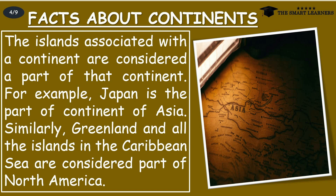The islands associated with a continent are considered a part of that continent. For example, Japan is part of the continent of Asia. Similarly, Greenland and all the islands in the Caribbean Sea are considered part of North America.